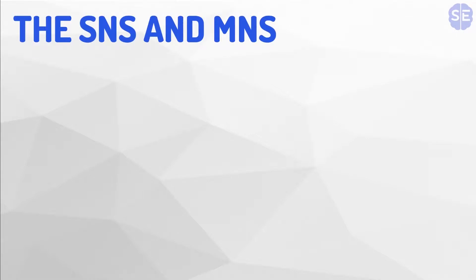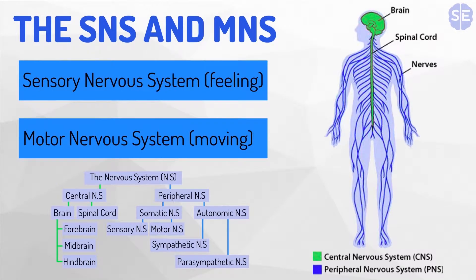Your sensory nervous system and motor nervous system. Your sensory nervous system is what retrieves senses from your sensory organs, like your eyes and your skin, and sends the gained information back to the brain, while your motor nervous system sends messages from your brain to your muscles, glands, and other internal organs, telling them what to do and how to perform certain actions.